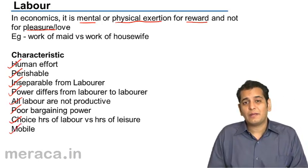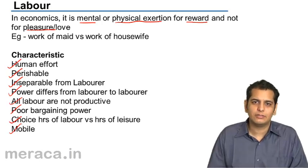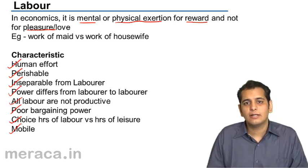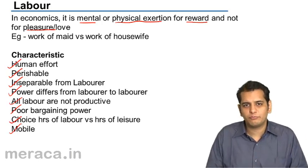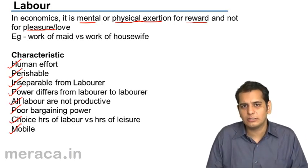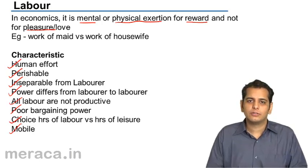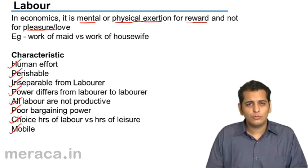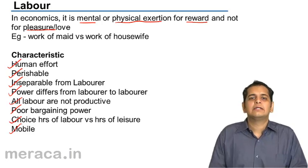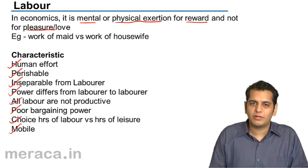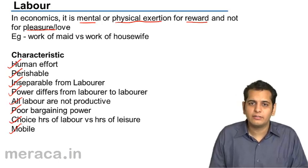Finally, labor is a mobile and active factor of production. Labor can be transported from one place to another, and a laborer by himself can produce goods. Although there may be some difficulties in transporting labor, it still remains a very mobile factor of production.